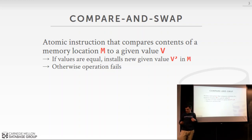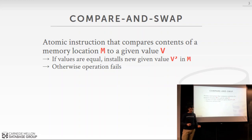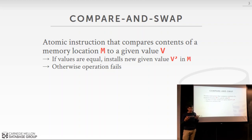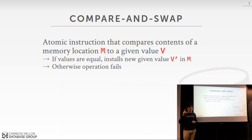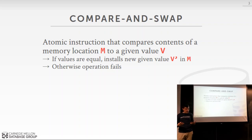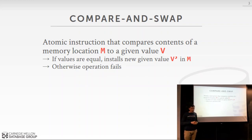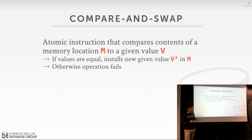Last class I asked who knew what compare and swap was — not everyone raised their hand, so I want to spend some time going through this. You're going to need this to understand how we implement in-memory concurrency control protocols, and also for project two, because you need to implement a latch-free data structure. Compare and swap is an atomic instruction the CPU provides that lets you examine a memory location, check whether the value is what you expect, and modify it if so. It's been around since the 1970s, but now it's very much in vogue because everyone is looking to build lock-free or latch-free algorithms.